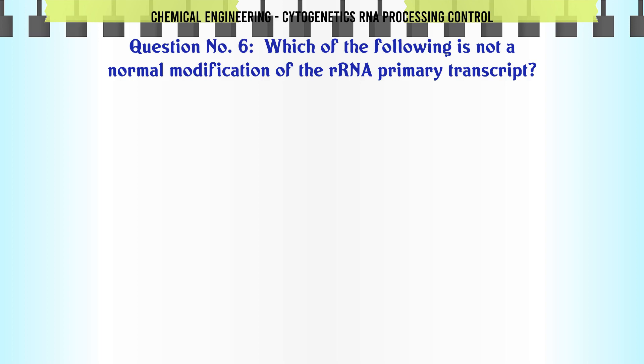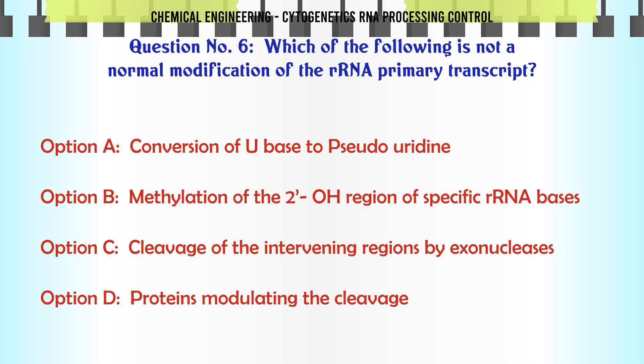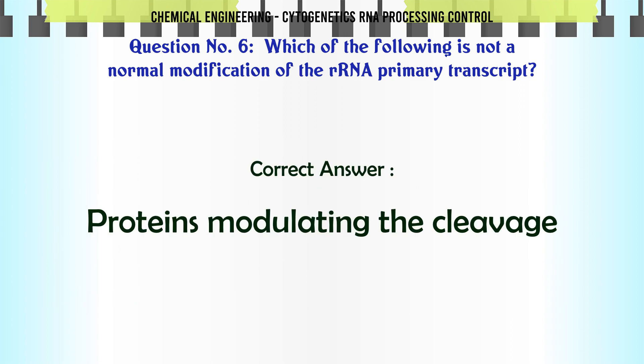Which of the following is not a normal modification of the rRNA primary transcript? A. Conversion of U-base to pseudouridine; B. Methylation of the 2'-O region of specific rRNA bases; C. Cleavage of the intervening regions by exonucleases; D. Proteins modulating the cleavage. The correct answer is proteins modulating the cleavage.